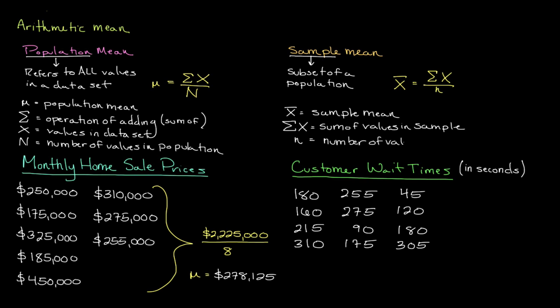Let's walk through a quick example and solve for a sample mean. Let's say that we're attempting to discover the average wait time from when a customer first stands in line to when they pay and are handed a receipt. Instead of observing every single transaction, we decide to obtain a sample by observing wait times in several stores. Looking at the table in the bottom right corner of your screen, we first need to sum up each wait time, which is expressed in seconds. Then we divide by the number of values in our sample, which is 12, to get our sample mean.